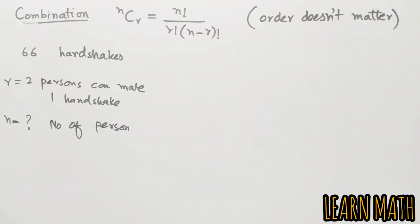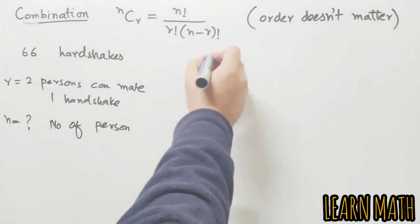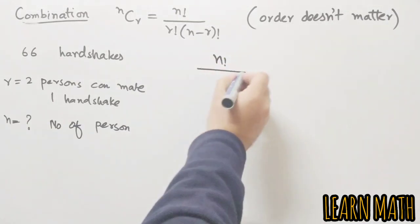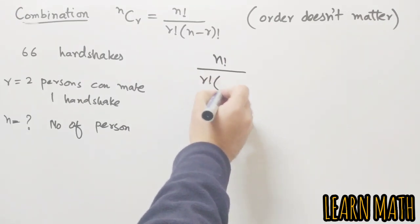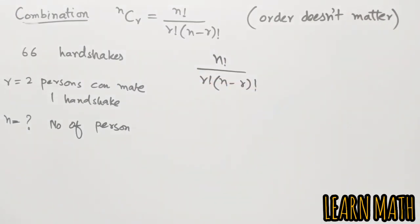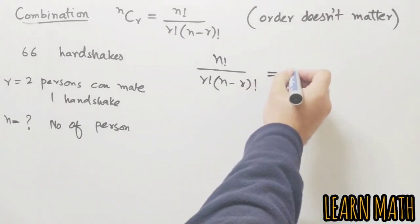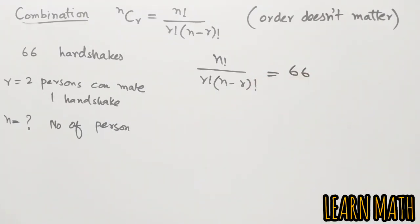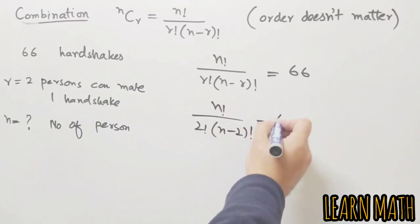We will take the formula n factorial divided by r factorial into n minus r factorial is equal to number of handshakes, which is given 66. Now we will put values in the formula, so n factorial divided by 2 factorial into n minus 2 factorial is equal to 66.